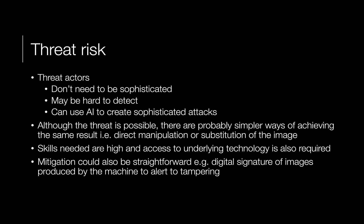Threat actors don't need to be particularly sophisticated, attacks can be hard to detect, and AI itself can be used to create sophisticated attacks. There are also simpler alternatives — direct manipulation by changing a value in a medical record, or substitution of the image, hoping it's never discovered. The skills needed are potentially high even when using tools, but mitigation can be straightforward: you can put digital signatures on all images so you can tell if they've been tampered with.